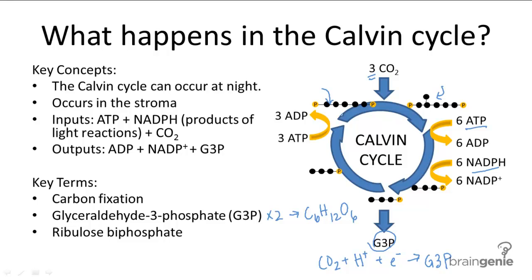So quickly to recap, the Calvin cycle is the second phase of photosynthesis, and although it's called the light-independent reactions, it still depends on light to occur. It occurs in the stroma, and it takes carbon dioxide and fixates it into G3P, also known as carbon fixation.